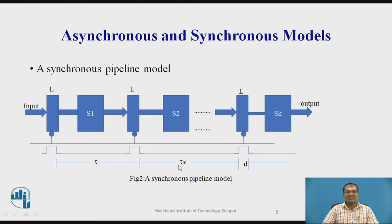But this clock pulse is divided into two parts. One is tau m and another is small d. This tau m indicates this is the delay of stage and d indicates delay in latch. So delay in latch plus delay in stage forms the total cycle which is called tau. So this is how the synchronous model works.